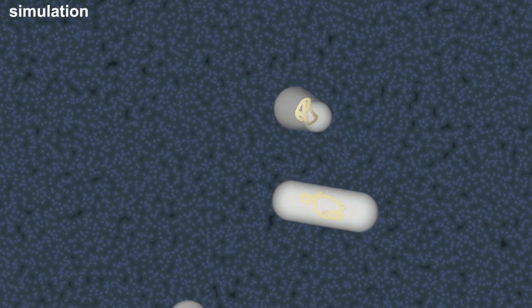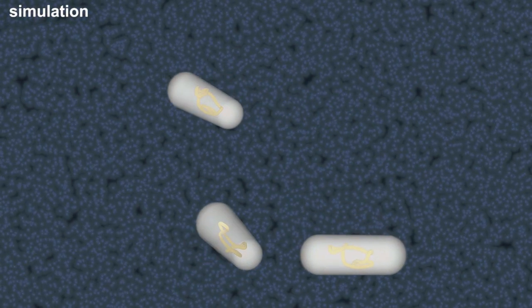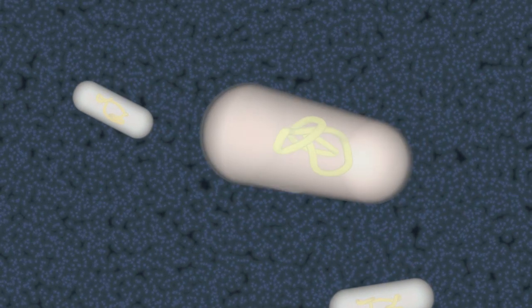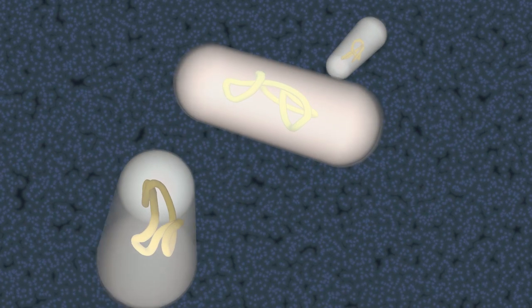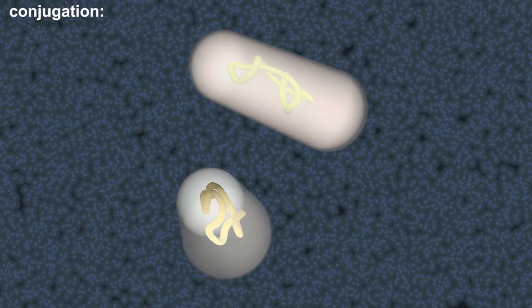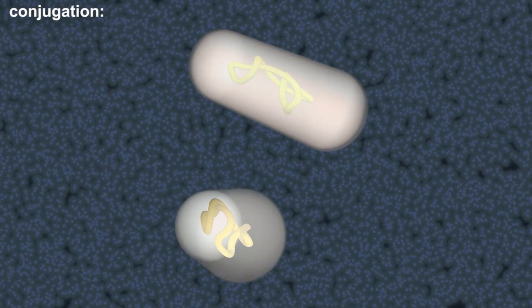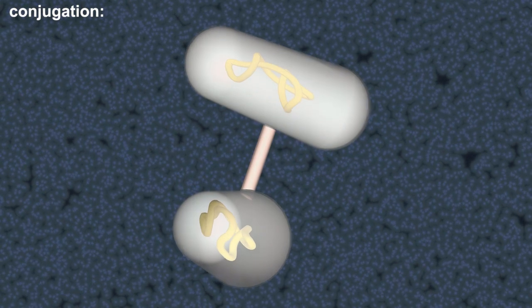In one case, a bacterial cell may transfer genetic information directly into another bacterial cell through a process called conjugation. In conjugation, one bacterium grows a duct, called a pilus, which attaches to the other bacterium.